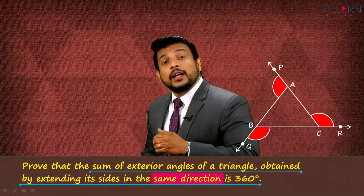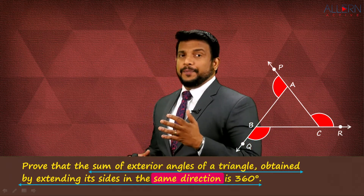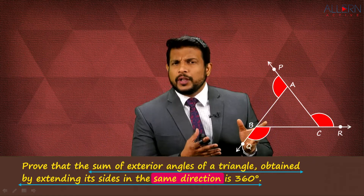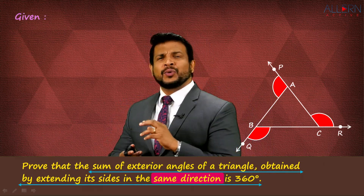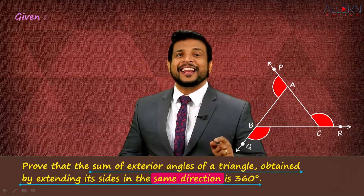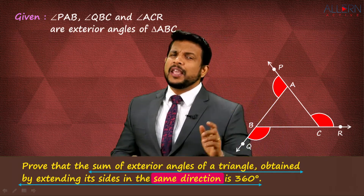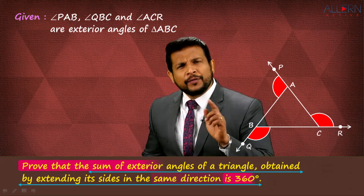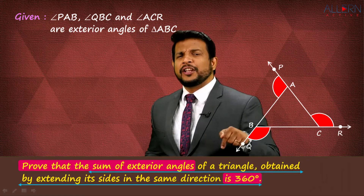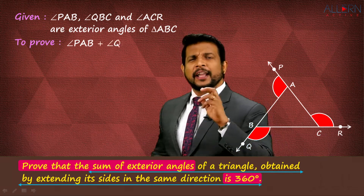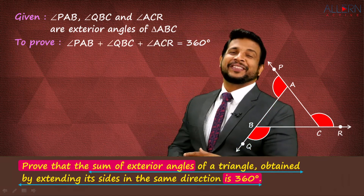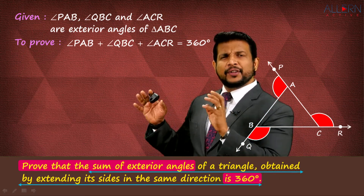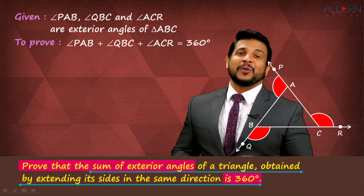They are saying the sum of all these exterior angles should equal 360 degrees. So in the Given, we write: angle PAB, angle QBC, and angle ACR are exterior angles of triangle ABC. And we need to Prove: angle PAB + angle QBC + angle ACR = 360°.